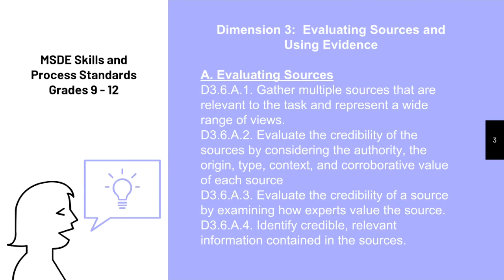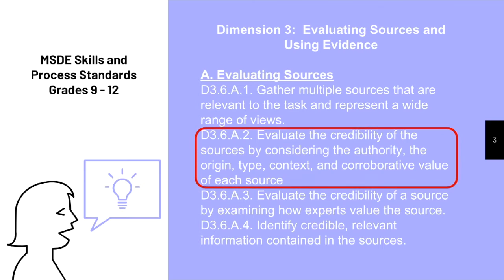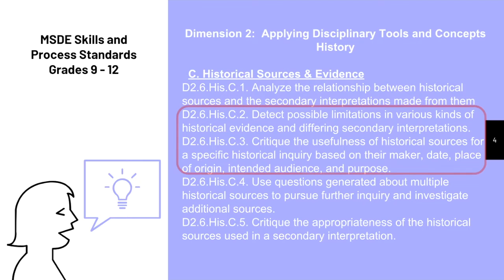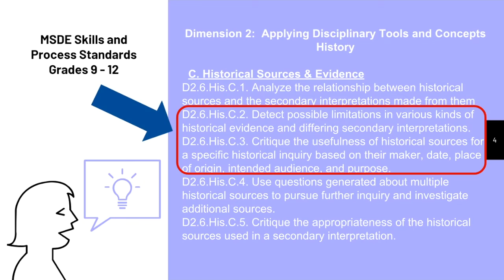Maryland Social Studies standards require students to evaluate credibility. Using SOAPSTONE routinely helps students internalize a process for doing so. Standards also require students to look at the limitations and value of a source. By making SOAPSTONE an expectation each time students analyze sources, you can build students who will transfer critical skills across all information they come in contact with, including news, social media, and historical sources.